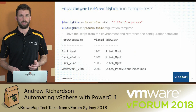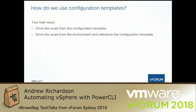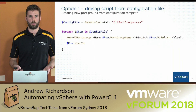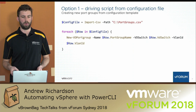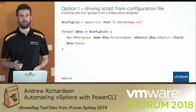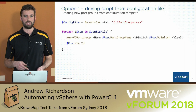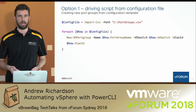There are two main ways to use configuration templates. Option one is using the configuration template to drive the script. In this example our use case is creating new port groups from our port group CSV file. We put the CSV into a variable, which converts it into a PowerShell object, and then we loop through each row, creating a new port group from each row using the row name, vd switch, and VLAN ID — simply looping through the CSV contents and performing an action for each line.